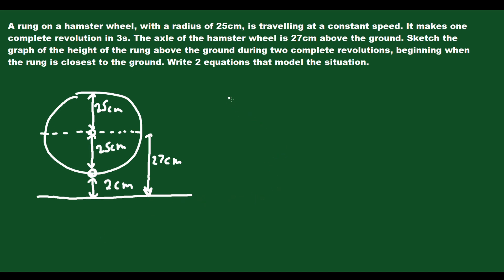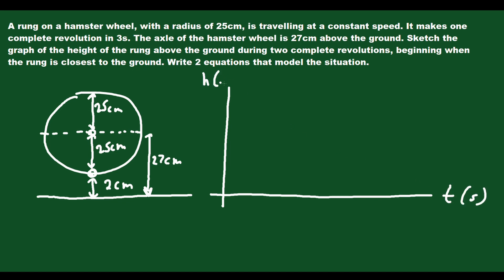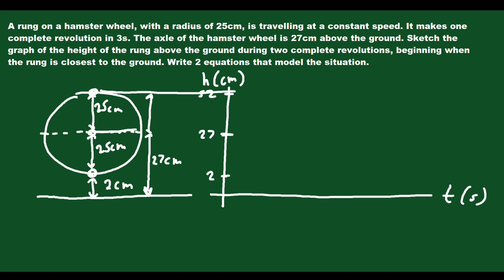Let's graph this with time in seconds on the x-axis and height in centimeters on the y-axis. The midline or axis is going to be at the same height as the axle, which is 27. The minimum value is 2 centimeters, and the maximum value is 27 plus 25, which is 52 centimeters. The maximums, axle height, minimum, and ground all line up nicely with the graph.